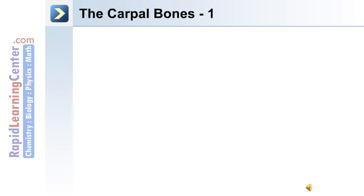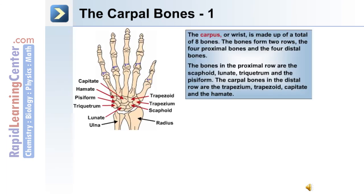The upper extremity also includes the carpal bones, or the wrist. The carpus, or wrist, is made up of a total of eight bones, forming two rows: the four proximal bones and the four distal bones. The bones in the proximal row are the scaphoid, lunate, triquetrum, and the pisiform bone. The carpal bones in the distal row are the trapezium, trapezoid, capitate, and the hamate.